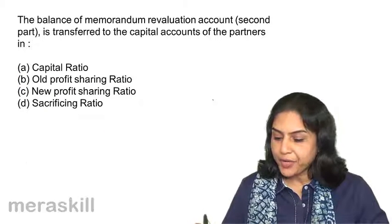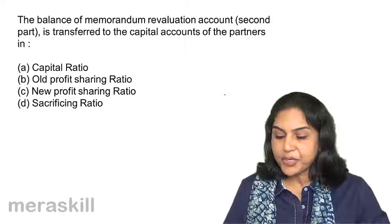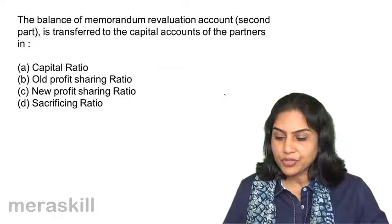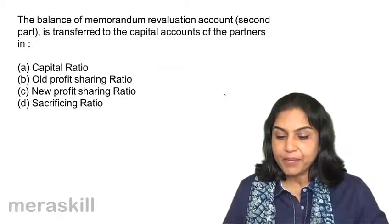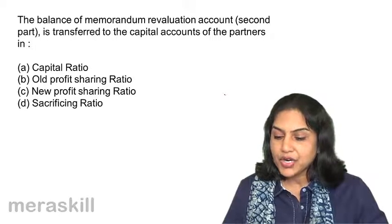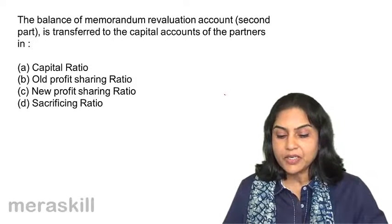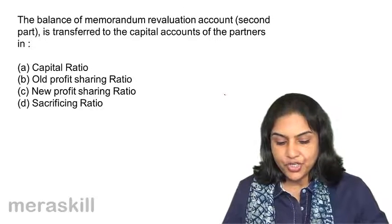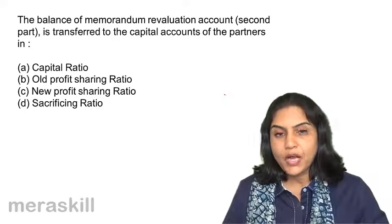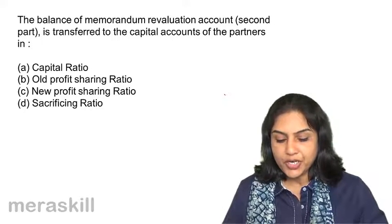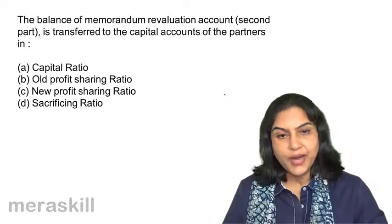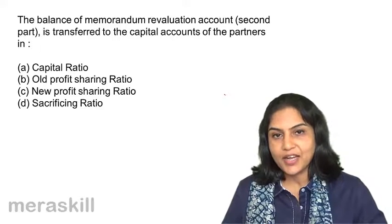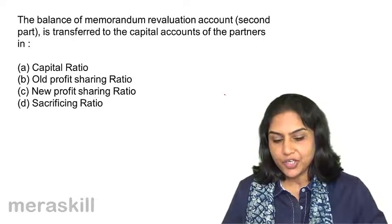The balance of memorandum revaluation account — the second part — is transferred to the capital accounts of the partners in: A. Capital ratio. B. Old profit sharing ratio. C. New profit sharing ratio. And D. Sacrificing ratio.